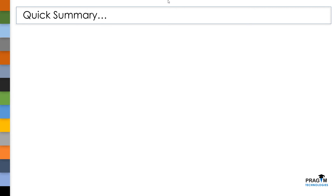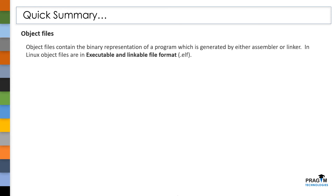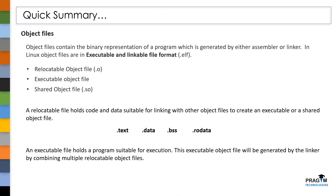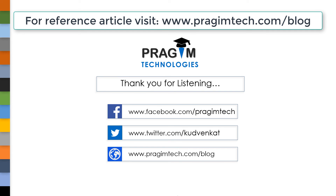Now let's see a quick summary of what we discussed today. Object files contain a binary representation of a program. In Linux, object files are categorized into three types: relocatable object file, executable object file, and shared object file. A relocatable object file holds code and data suitable for linking with other relocatable object files to produce an executable or shared object file. An executable object file contains a program and data suitable for execution, generated by the linker by combining multiple relocatable object files, containing segments such as code and data. The main agenda of this session was to make you understand about the sections and segments of an object file. We will see more in depth about these sections and segments as we go further. That's all for this session — thank you for listening.